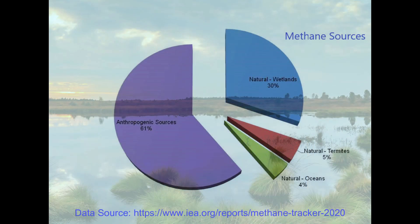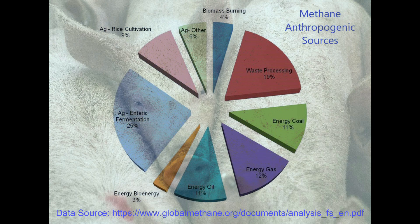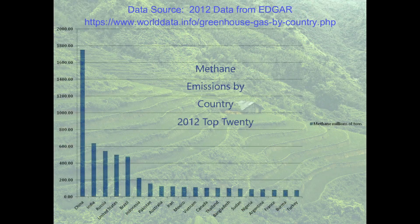This bar chart represents carbon dioxide emissions by country — the 2016 top 20 emitters. By far, China was the top emitter, followed by the United States, India, Russia, Japan, and Germany. For methane sources: 39% are accounted for by natural sources, while 61% are from human sources. 30% of natural methane comes from wetlands, 5% from termites, and 4% from the oceans. 37% of methane sources come from energy production, 25% from enteric fermentation — gases from livestock — 19% from waste processing, 4% from biomass burning, and 15% from agriculture.